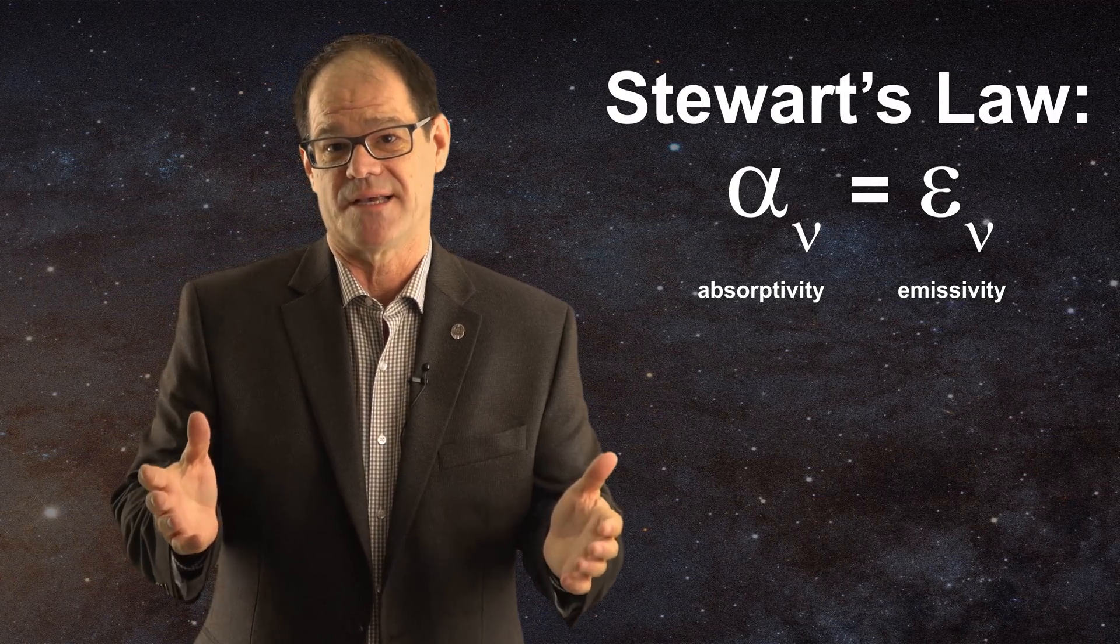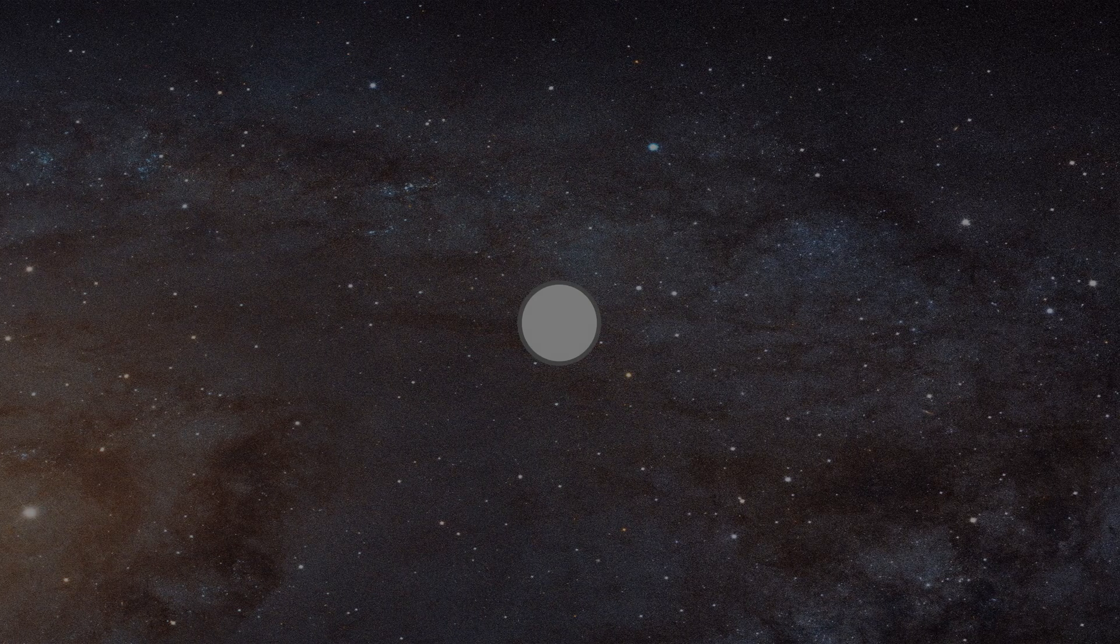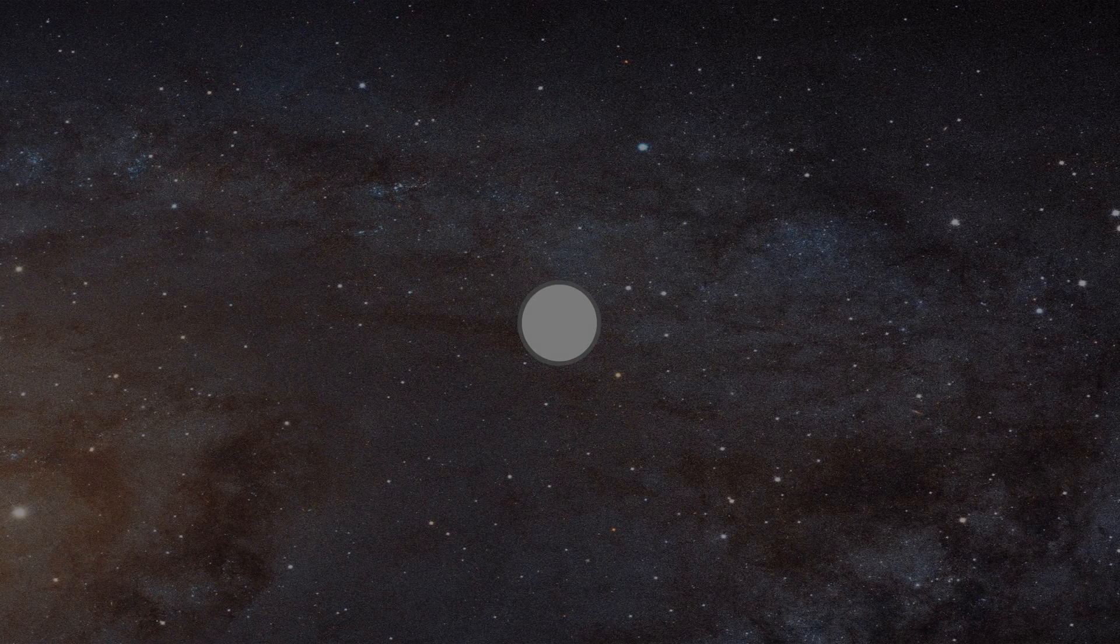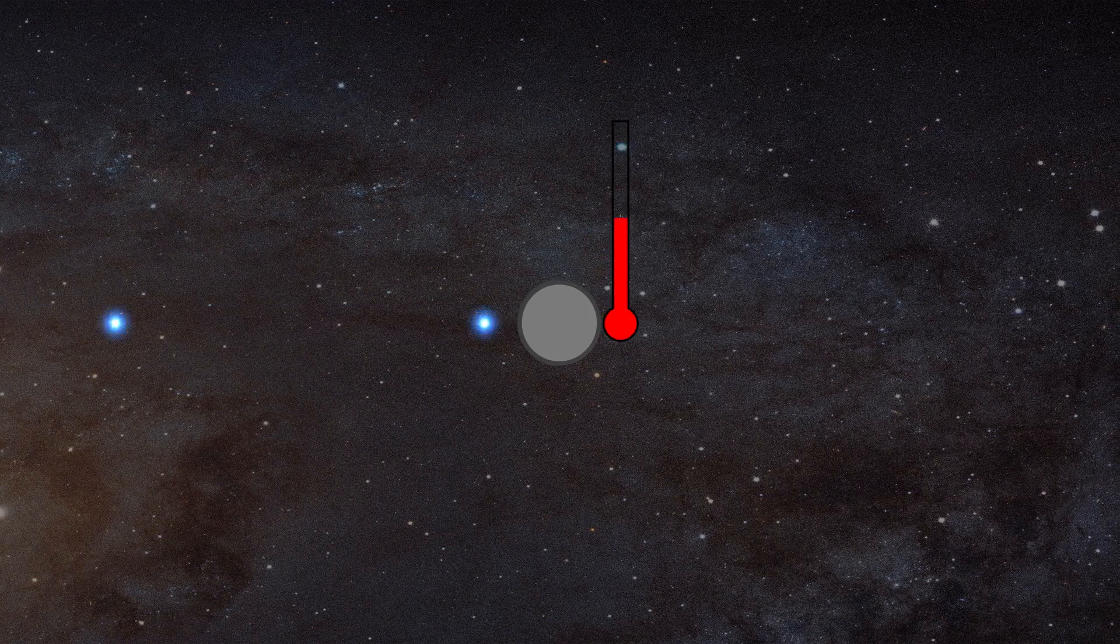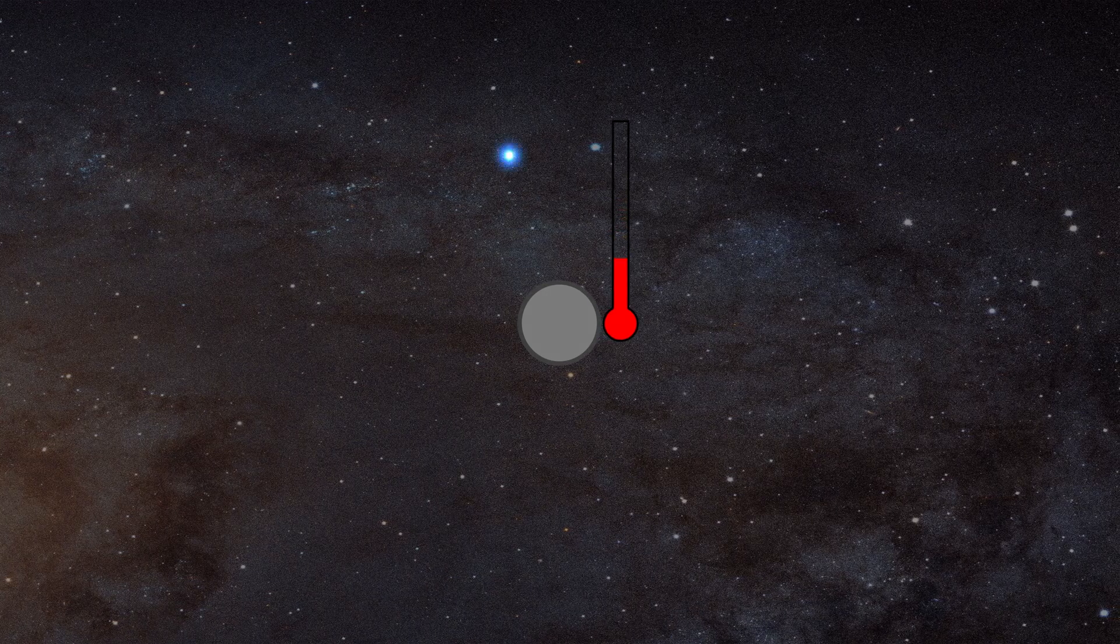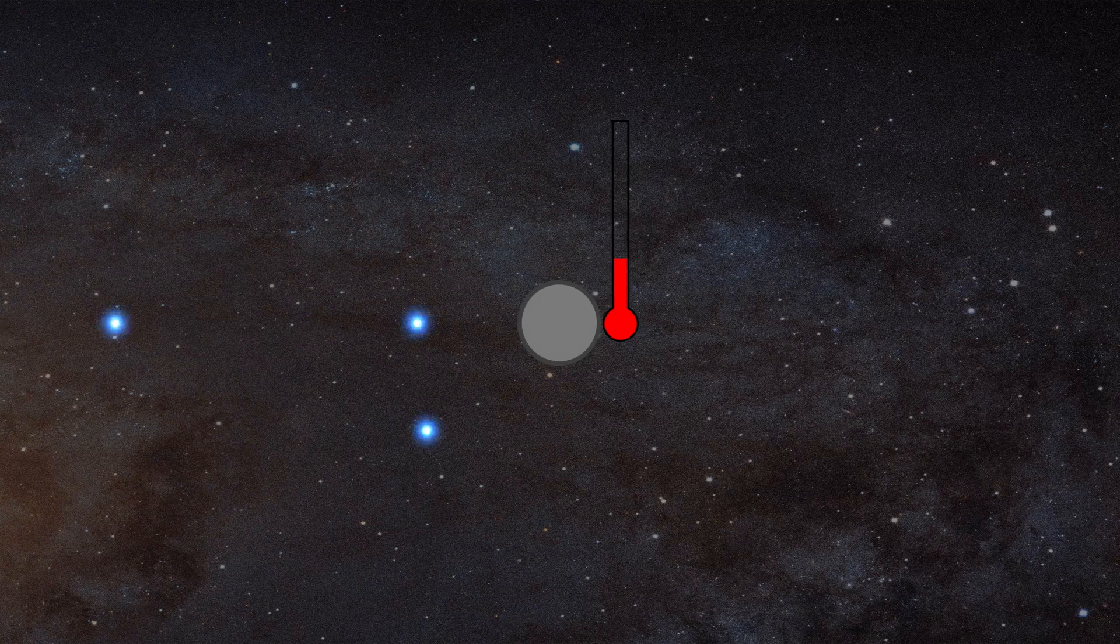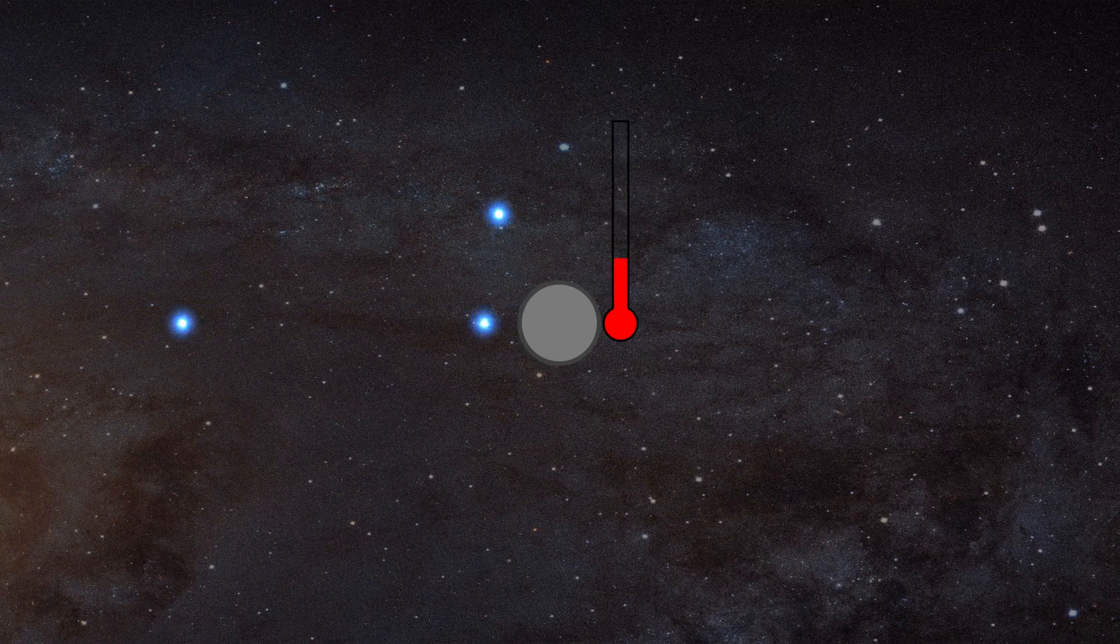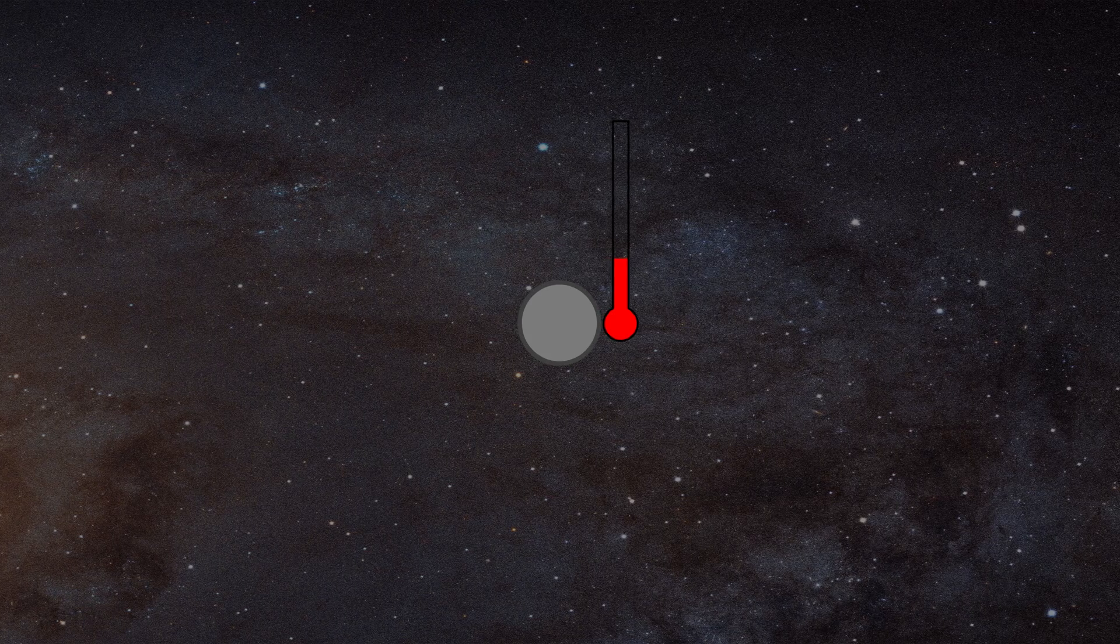Once again, imagine an object suspended in an empty universe. The only way that its temperature could be increased would be by absorbing net photons from the universe. Conversely, its temperature would slowly drop if it emitted photons into the universe. However, if the amount of light received exactly matched the amount of light it emitted, then its temperature would not change. That is Stewart's law.